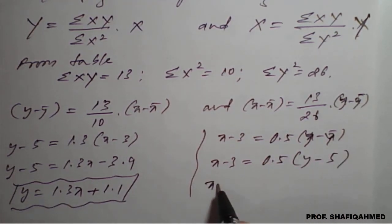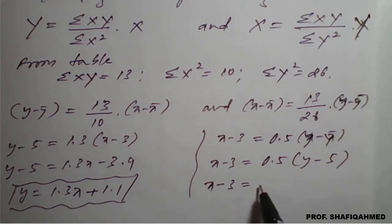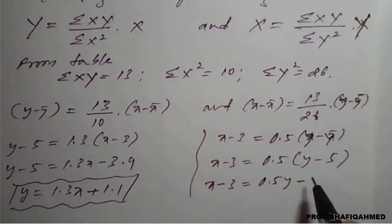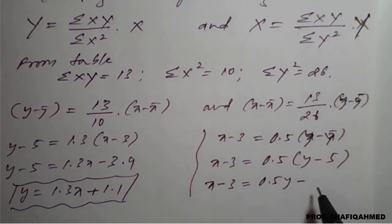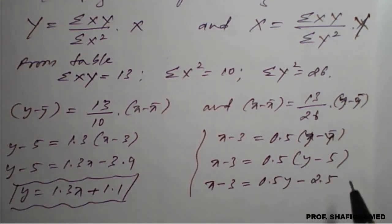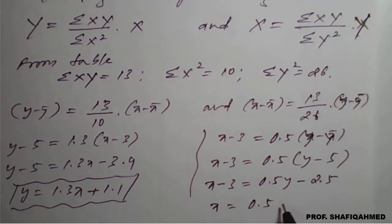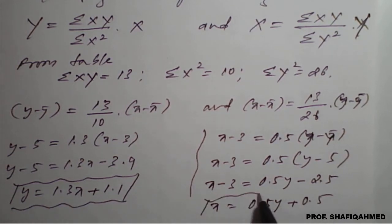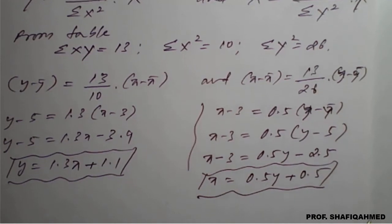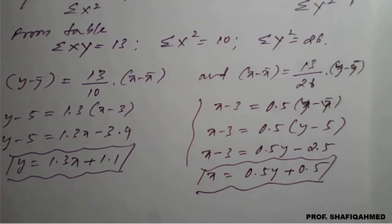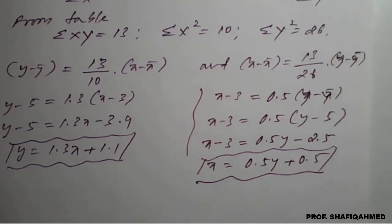On simplification, X minus 3 is equal to 0.5Y minus 0.5 into 5, which is 2.5. Shifting minus 3 to the right-hand side, we get X is equal to 0.5Y plus 0.5. So, once we get these regression lines, these are the required regression lines.